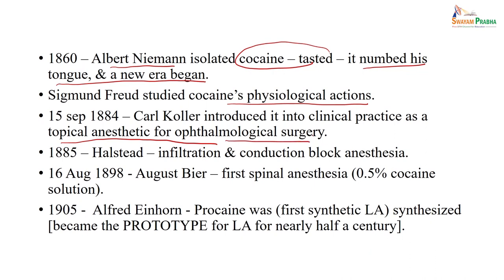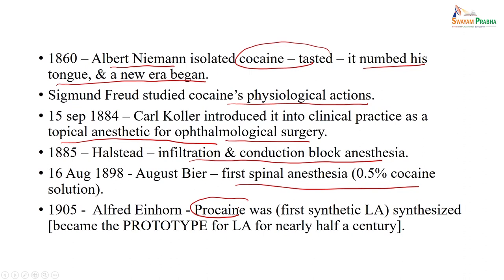In 1884, Koller used this local anesthetic in the eyes for eye surgery. Later in 1885, Halstead used infiltration and conduction block anesthesia, such as brachial block or particular nerve block. Later in 1898, August Beer used the first spinal anesthesia — injecting the anesthetic agent into the subarachnoid space through the lumbar region — blocking the lower limbs or part of the abdomen. In 1905, Alfred Einhorn prepared the drug called procaine.